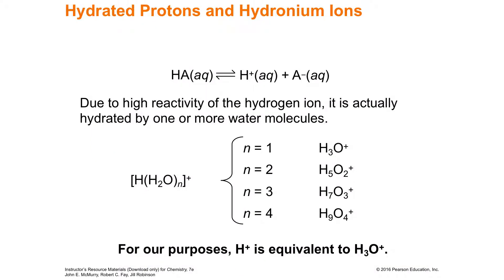Hydrogen is so reactive that water pulls it so strongly it doesn't just react with one water molecule — it can react with more than one. You can end up with hydronium complexes: three, five, or seven water molecules somehow collected around that hydrogen, making some kind of complex. Hydronium is what you consider the acid, but these larger complexes are also acids.